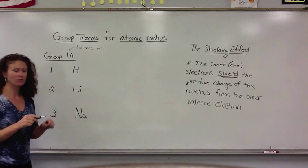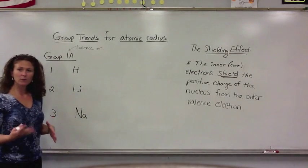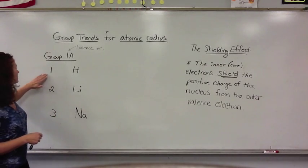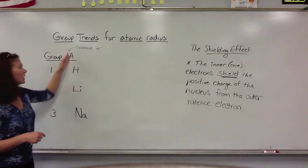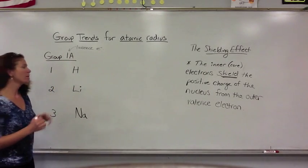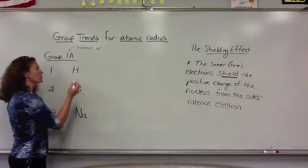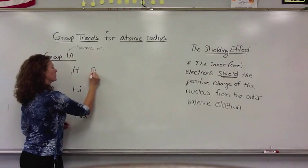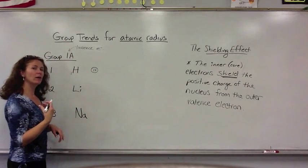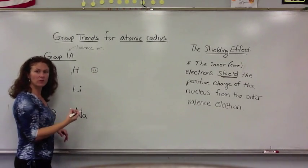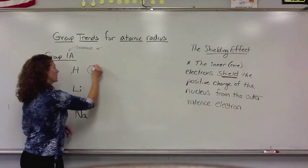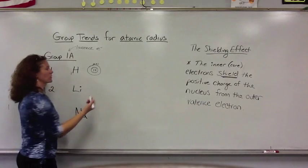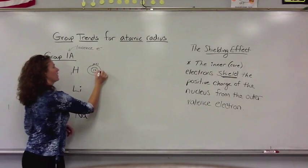The first element in Group 1A is in the first period, and that's hydrogen. Hydrogen's atomic number is one — one proton in the nucleus — and that electron it has is on the first energy level, which I'll designate as n equals 1 for the principal quantum number, and there's one electron.